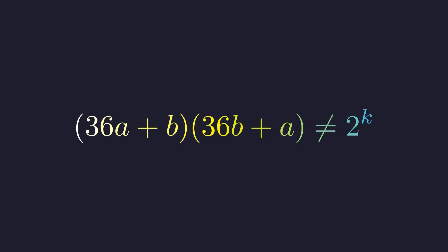We are asked to prove that for any positive integers a and b, the expression (36a + b)(36b + a) cannot be a power of 2.